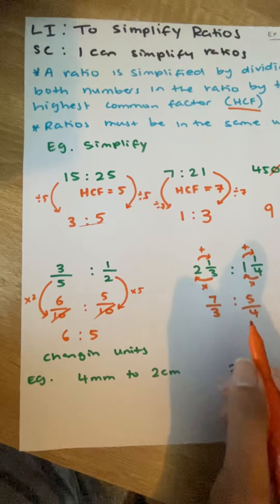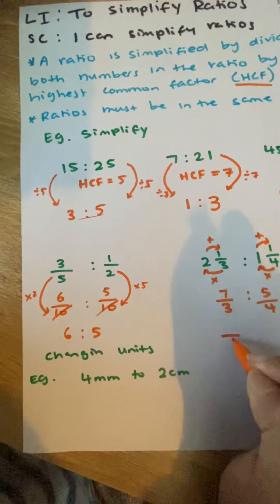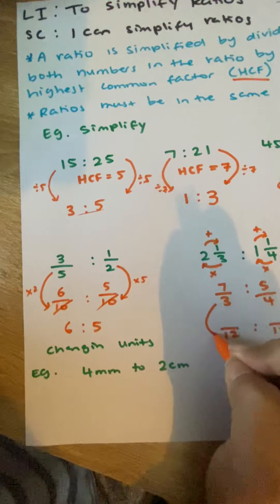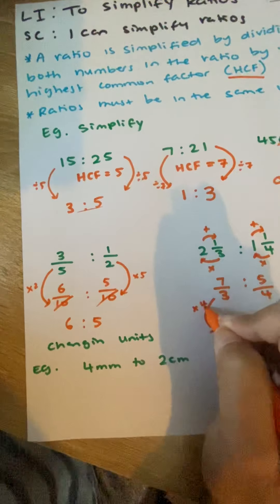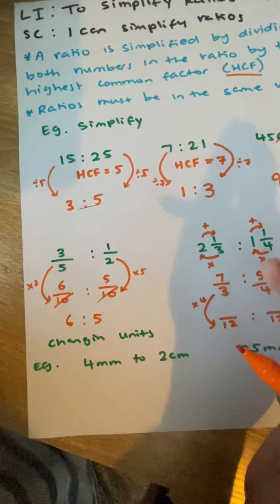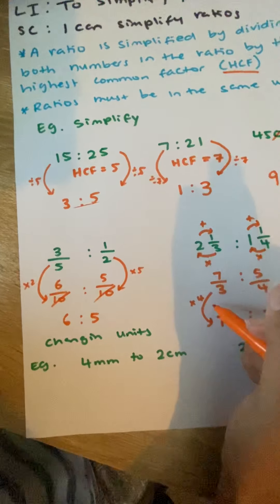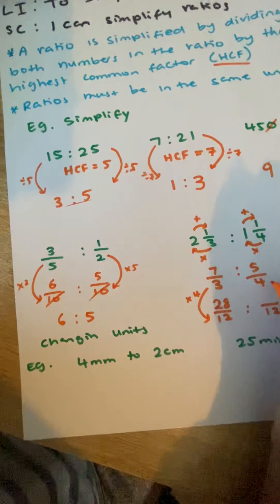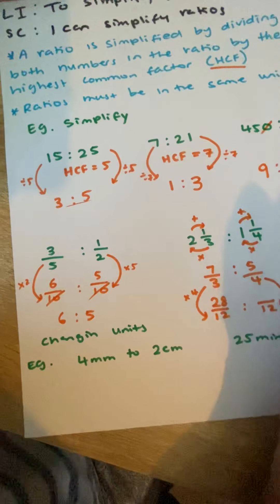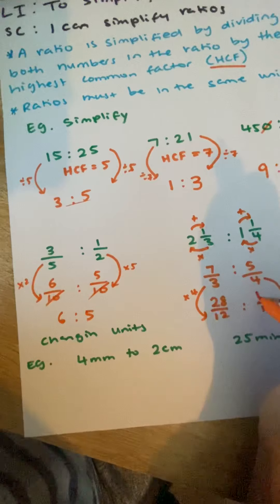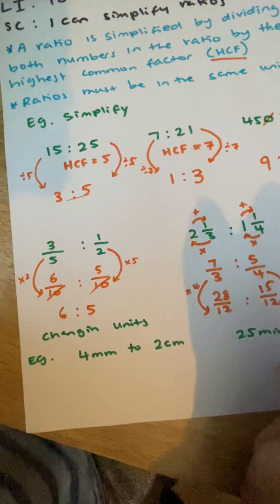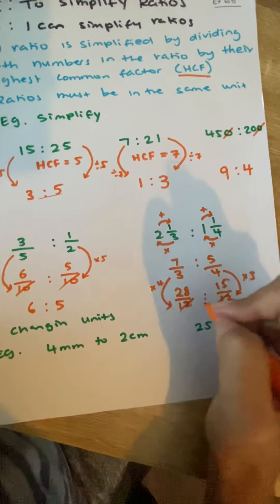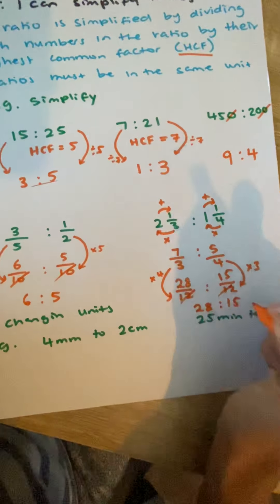So, 3 and 4 both go into the number 12. So, we're going to write 12, 12. And then we see how many times does 3 go into 12? It goes in 4 times: 3, 6, 9, 12. So, we do 7 times 4 is 28. And we can go here. 4 into 12 goes 3 times. 5 times 3 is 15. So, what I can do, because both of our denominators are now the same, I can cancel them. And I can go, my ratio is 28 to 15.